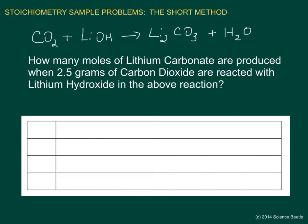Now notice the reaction is not balanced, so let's go ahead and balance that quickly. The first thing I see is we have two lithiums on the right side, so I need a coefficient of two for lithium hydroxide on the left. That gives me two carbons on both sides, two oxygens from CO2, and two oxygens from lithium hydroxide. So my coefficients are 1, 2, 1, 1 — the equation is now balanced.